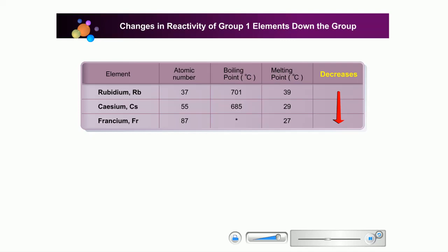Rubidium, cesium, and francium also can conduct heat and electricity, and they have low melting and boiling points.